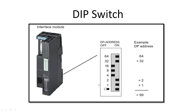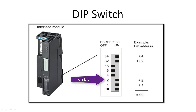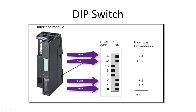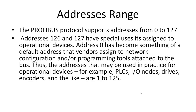As you can see in the picture, we have settings like this: 1, 2, 4, 8, 16, 32, 64. So if you want to give a unique ID of 3, what you're going to do is turn on 1 and 2 — because 1 plus 2 equals 3. But let's suppose you want to give address 99 — for 99 you have to turn on 1, 2, 32, and 64, because if you add these it will become 99.